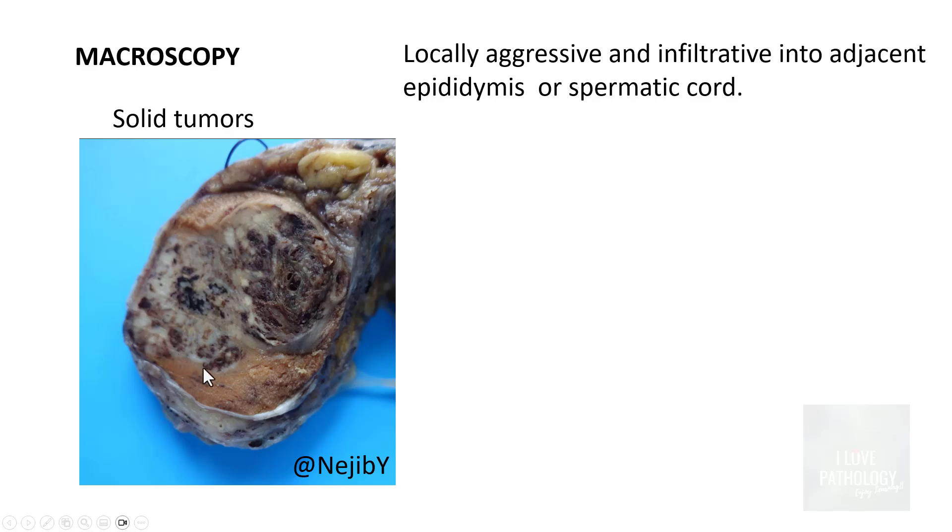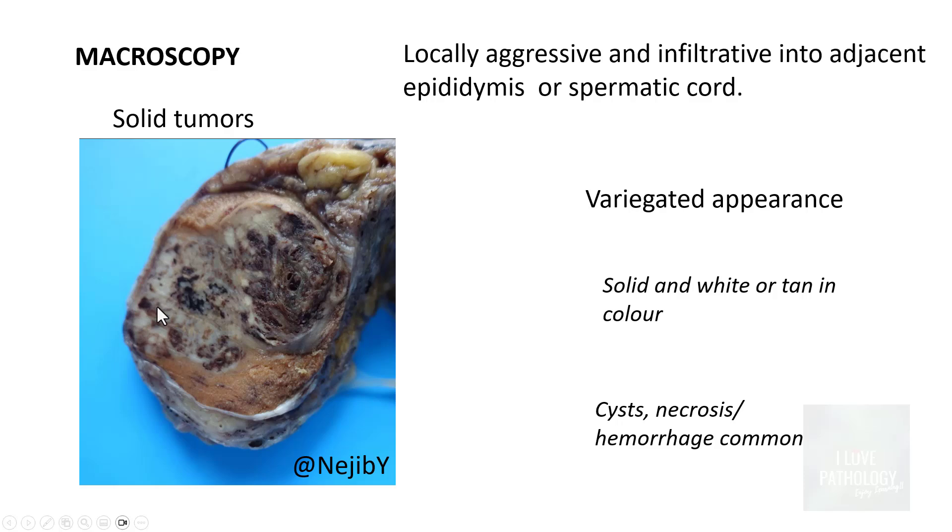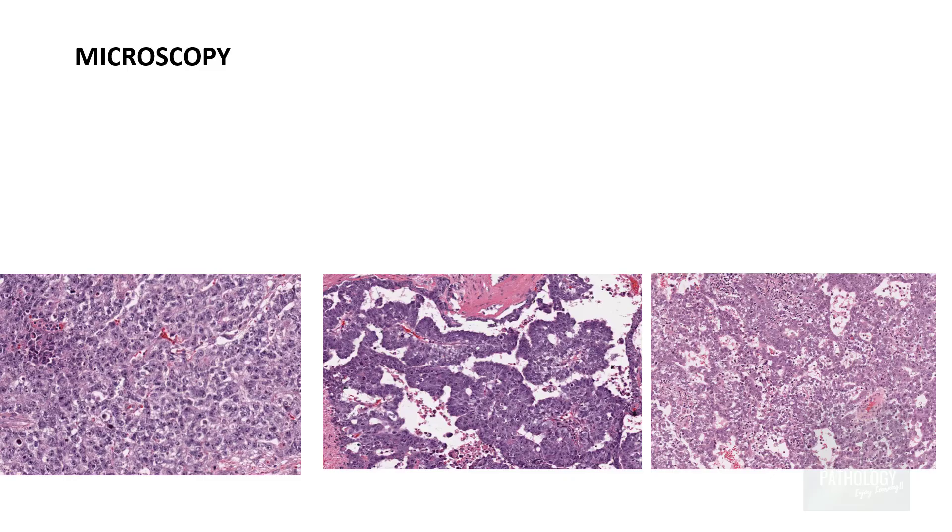On cut surface they show variegated appearance. They can have solid areas, solid white, gray white to gray tan areas, they can have cystic areas, necrotic areas, and hemorrhagic areas. All these areas are seen in case of cut section of the embryonal carcinomas.